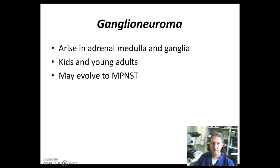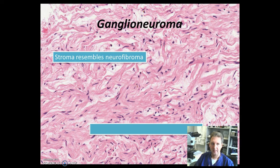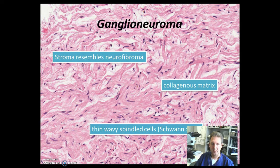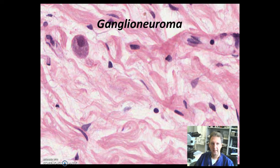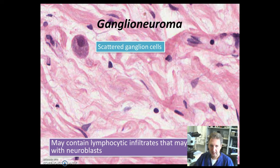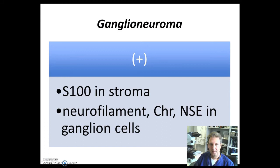The next benign lesion is ganglioneuroma, which arises in the adrenal medulla and ganglia. It's common in kids and young adults, and may evolve to malignant peripheral nerve sheath tumors. Histologically, the stroma resembles a neurofibroma with spindle cells embedded in a collagenous matrix, and there are thin wavy spindle cells or Schwann-type cells. Occasionally you'll see ganglion cells which may have mild to moderate atypia. These lesions may contain lymphocytic infiltrates that may be confused with neuroblasts. The ganglioneuroma is positive for S100 in the stroma and neurofilament, chromogranin, and NSE in ganglion cells.